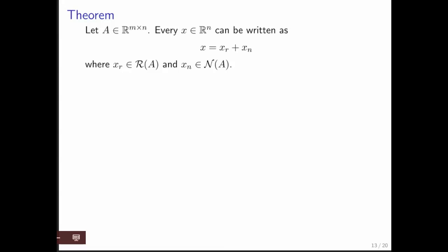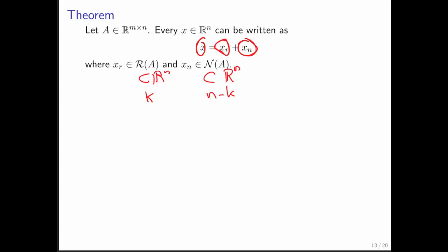Here's another really important theorem. The row space of A is a subspace of Rn, the null space of A is a subspace of Rn, the dimension of the row space is k, and the dimension of the null space is n minus k, and these two spaces are orthogonal. It would be very nice if any arbitrary vector x in Rn could be written as a vector in the row space of A added to some vector in the null space of A — similar to how any vector can be written as the sum of components along each unit basis vector.